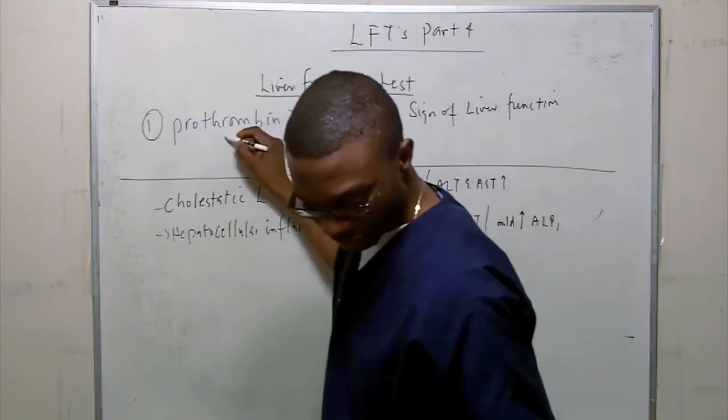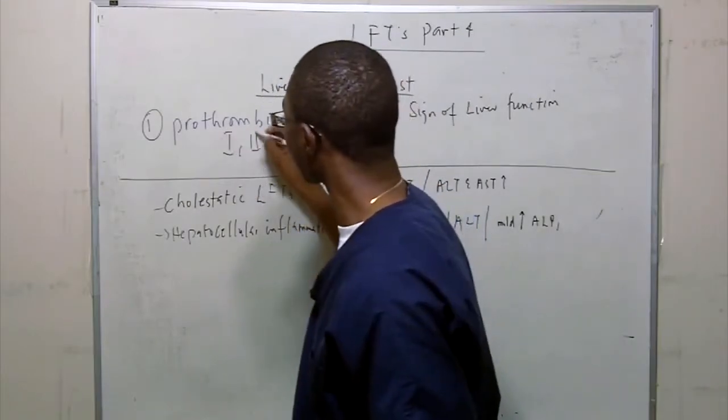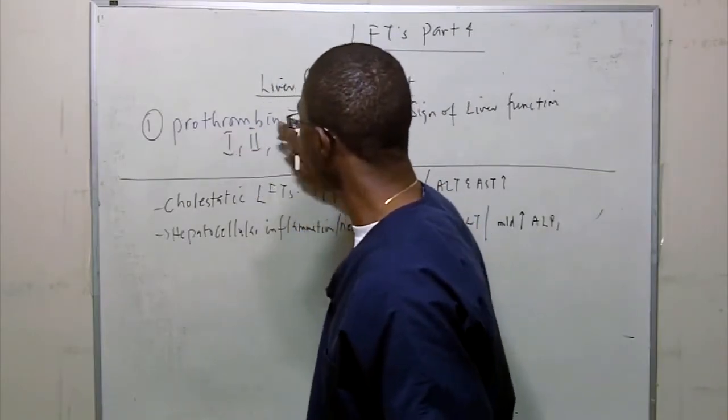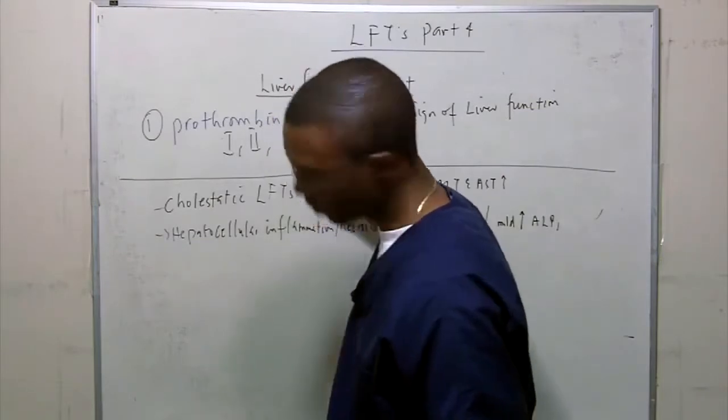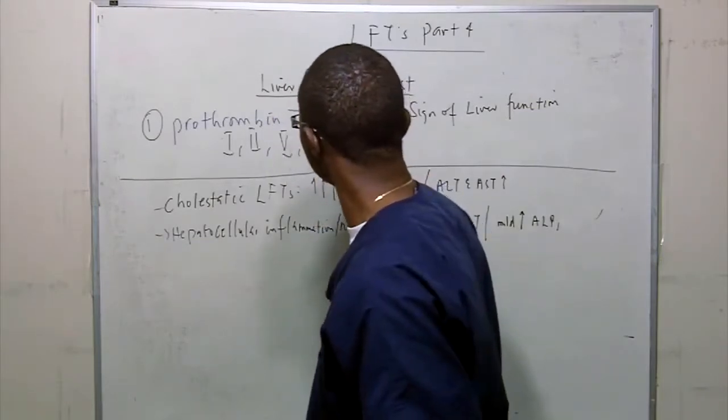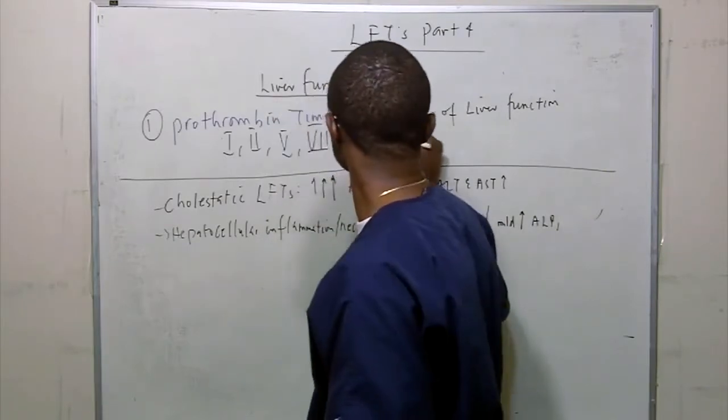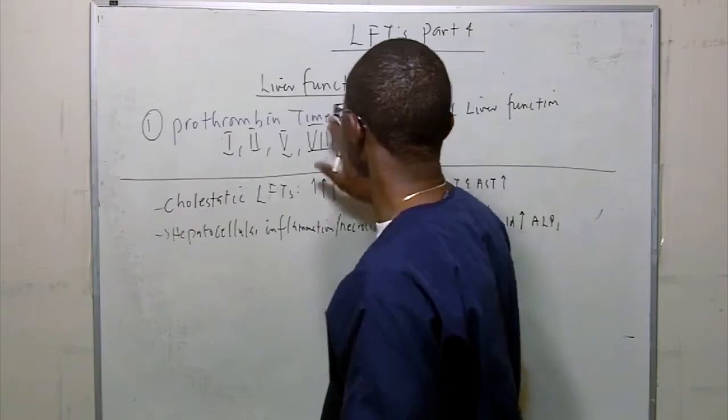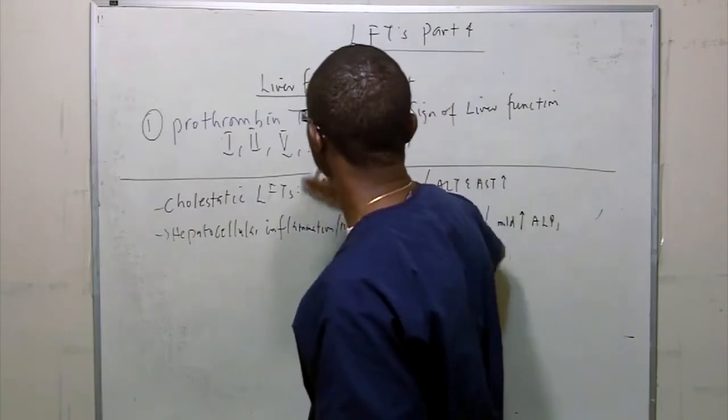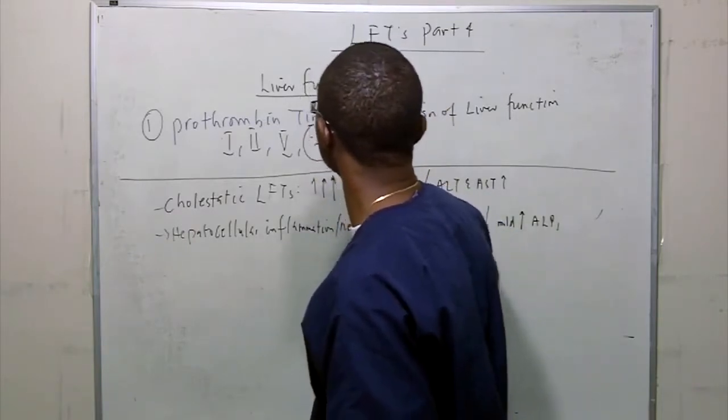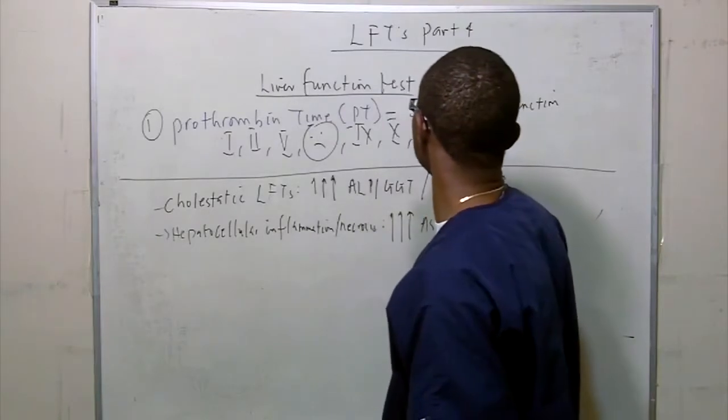Because if your liver is still functioning, you should still be cranking out factors 1, factor 2, factor 5, 8, 9, factor 10. And if factor 8 is not involved, you're going to take him out, and factor 12.